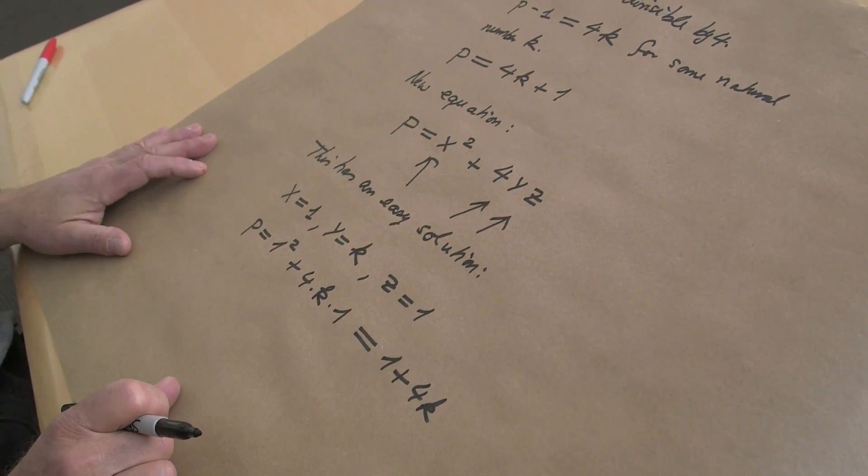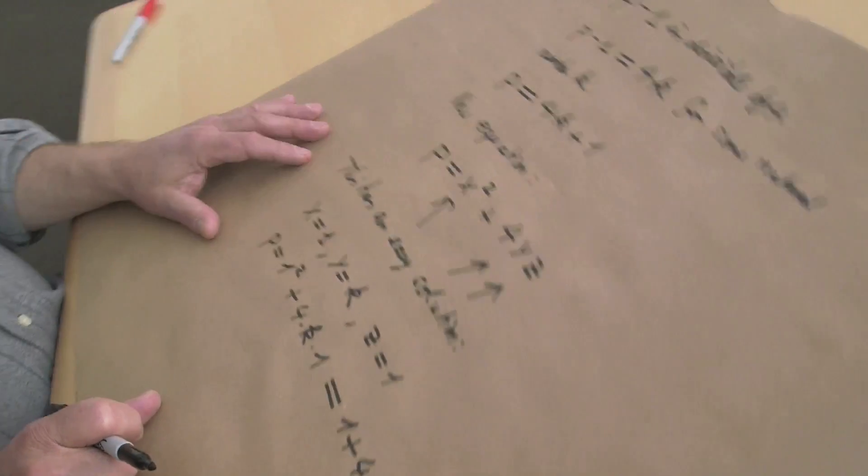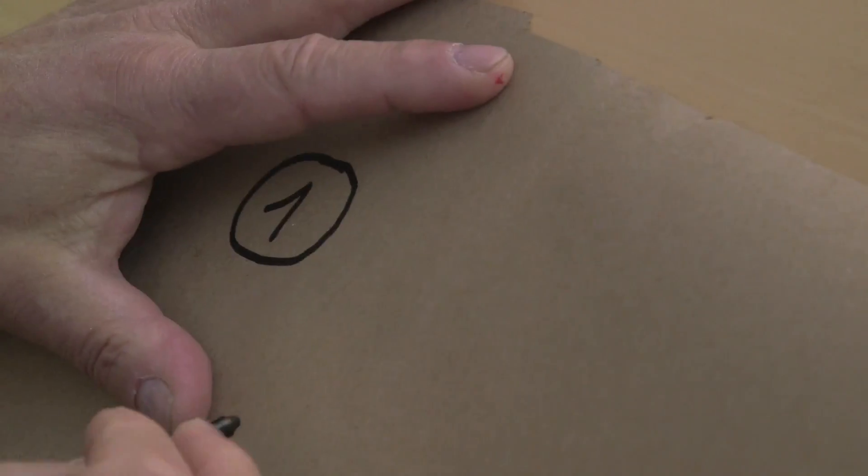The question whether this equation has a solution has an easy answer, whereas the question whether the original equation has a solution (p equal x squared plus y squared) is our difficult problem. There we are still a way to go. Now, I'll explain first the steps. Later we can see how much of the steps we fill with more details. Just an observation: